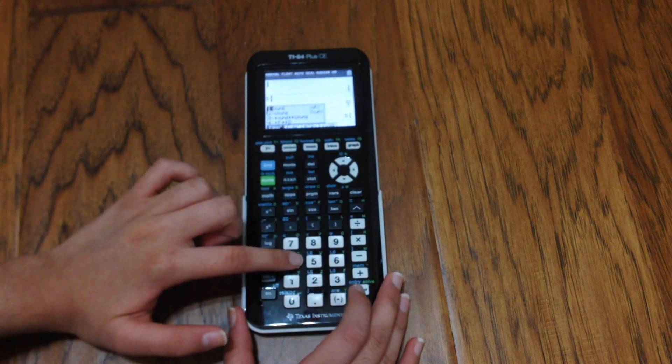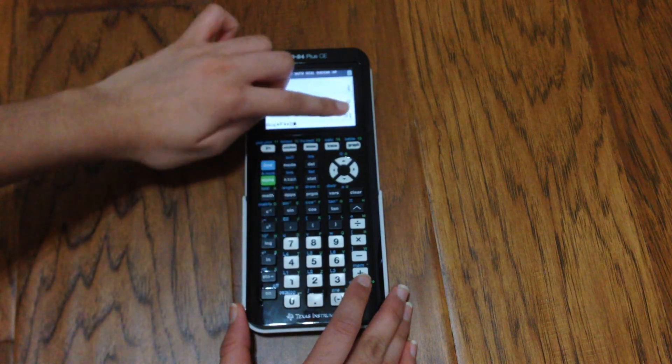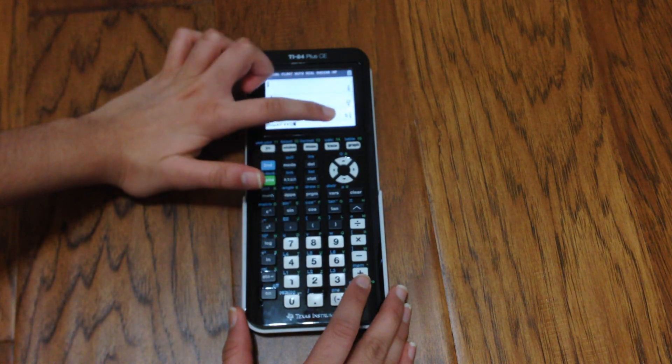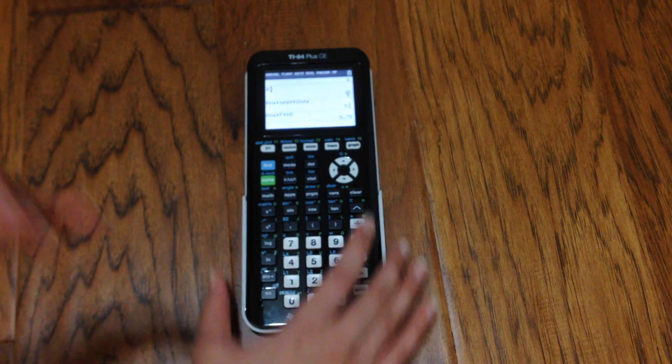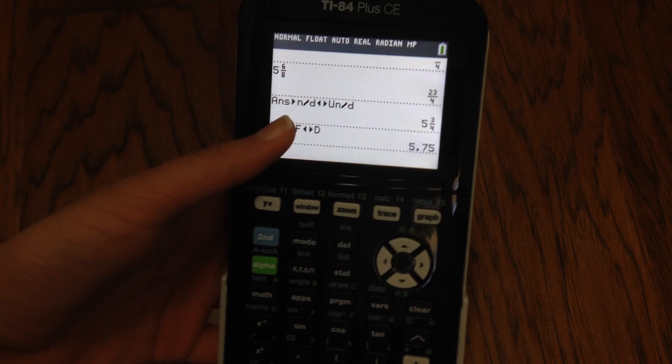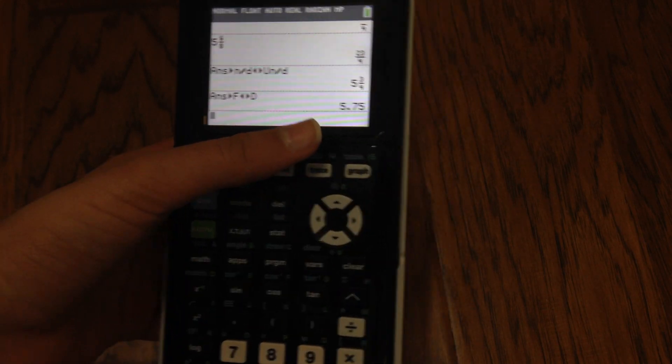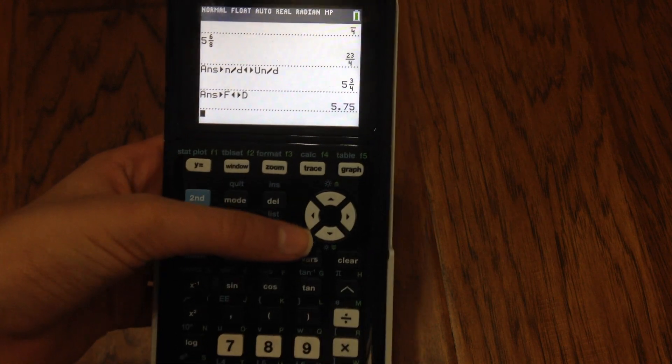Alpha Y equals 4 will convert a fraction to a decimal. So it's going to convert this fraction right here to a decimal. And there we go - it converted the fraction 5, 3 over 4 to 5.75.